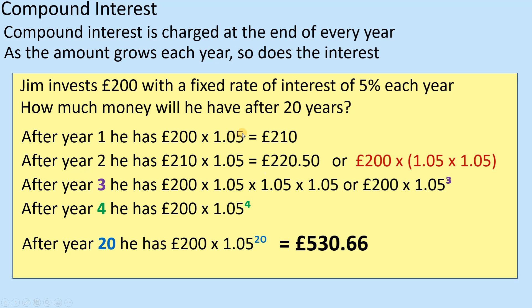After year one it was just to the power of one. After year two I'd done it twice. After year three, I've done it three times — so you'll realise where the power comes in. After 20 years, he's going to have £530.66. I've more than doubled his money, which is not bad.